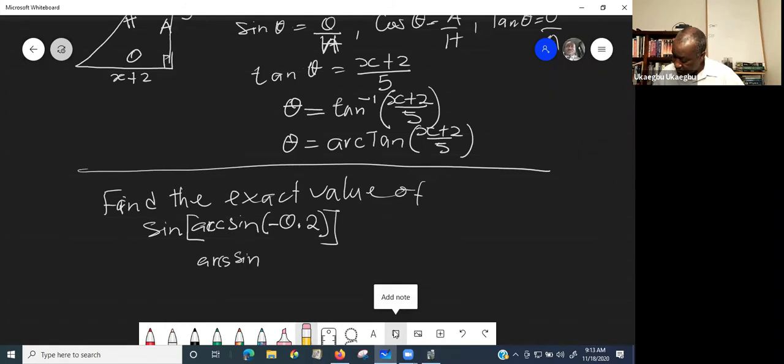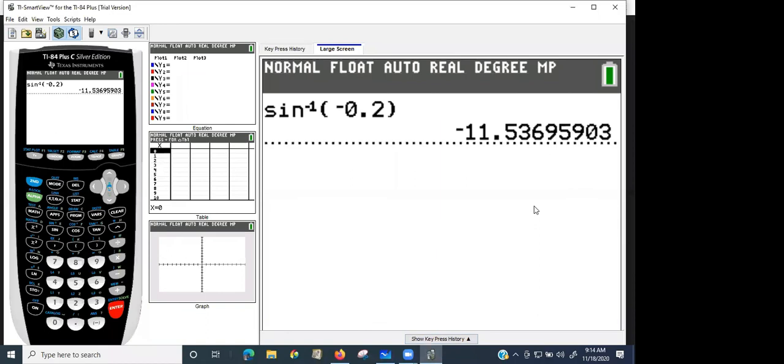You better write it this way. So, you can see that you are going to get sine of, then the value of the arc sine, which is negative 11.1, 11.5.